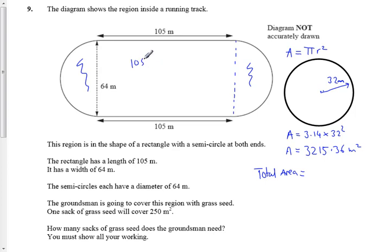105 multiplied by 64, so 105 multiplied by 64, that gives us 6720 meters squared for the rectangle.